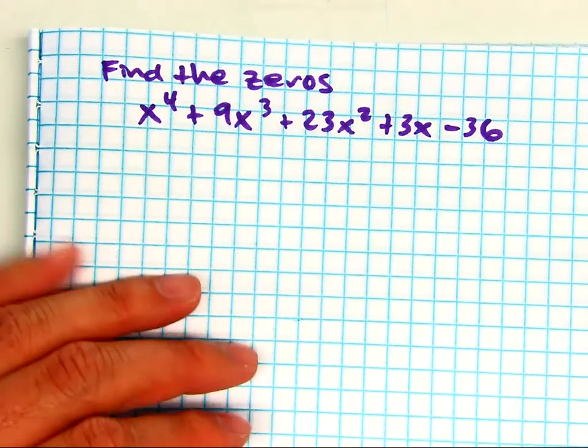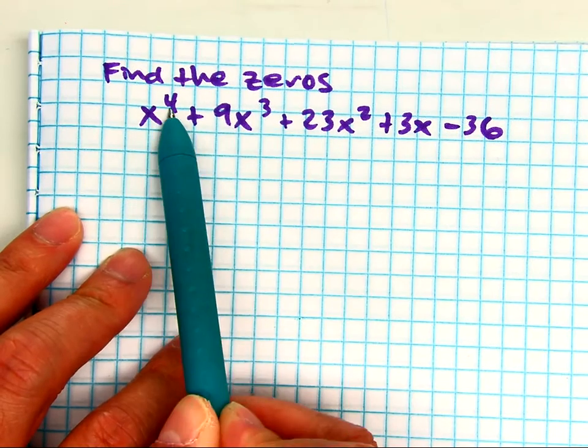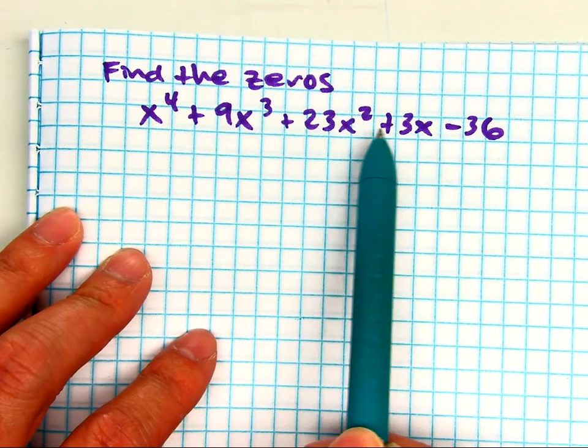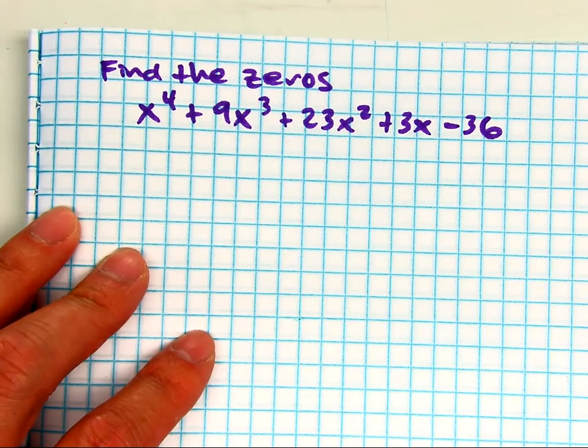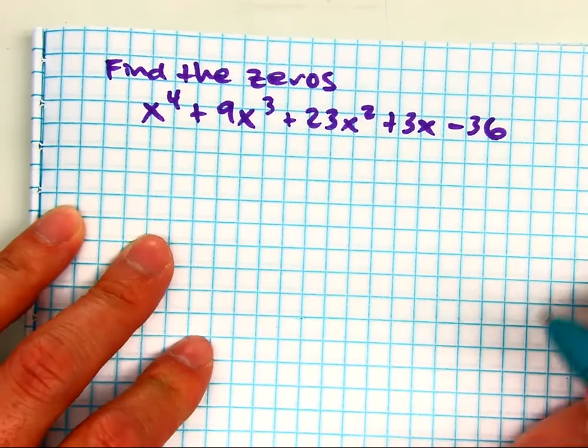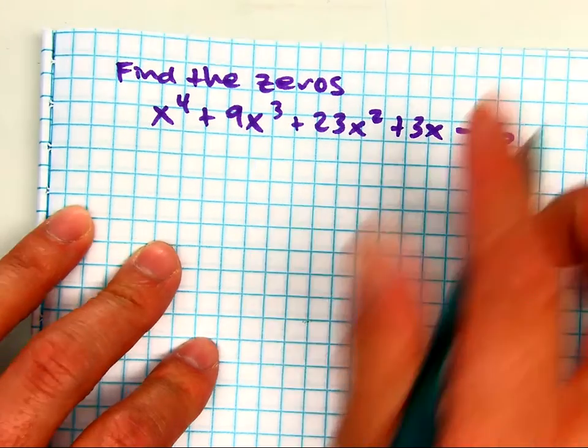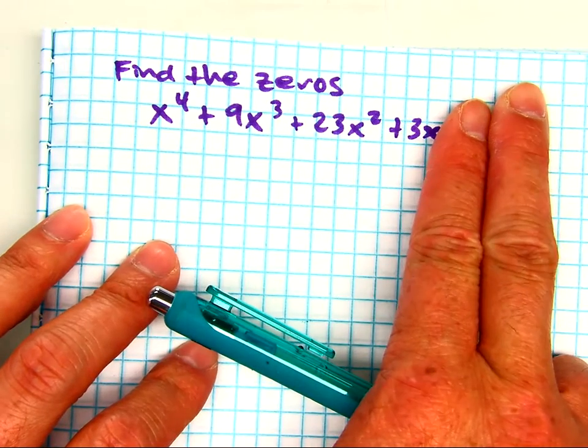Let's count the number of terms. Count with me. Ready, set, go. One, two, three, four, five. Can you use Xbox? No. So can you use factoring by grouping? No. You can only use factoring by grouping if it's four terms.